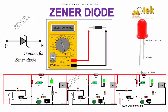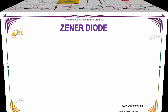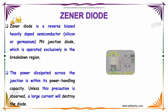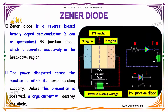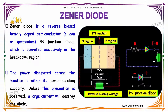We'll move on to Zener Diode. A Zener Diode is a reverse biased, heavily doped semiconductor. It is a PN junction diode and it is reverse biased.